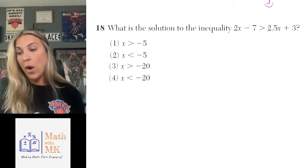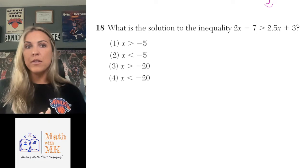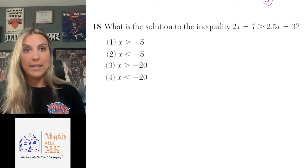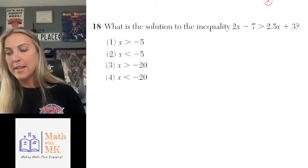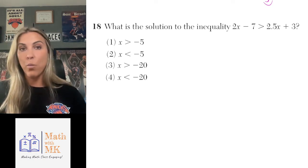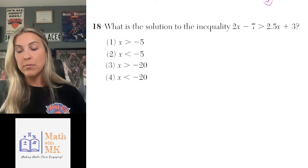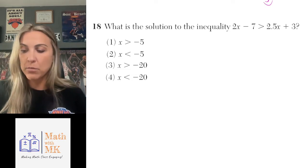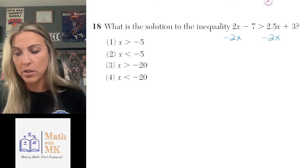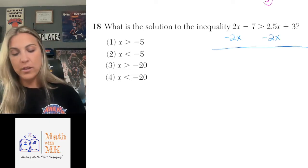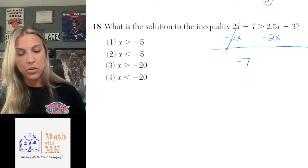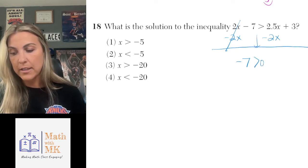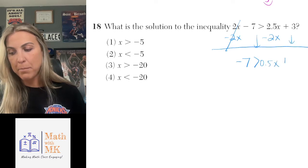Number 18 brings us to our first inequality. Solving inequalities is very similar to solving equations with only one difference that I'll explain if we get to it. You're trying to get the variable by itself just like an equation. This inequality has x on both sides, so I need to get the variable on one side. I'll subtract 2x from both sides — that leaves negative 7 greater than 0.5x plus 3.